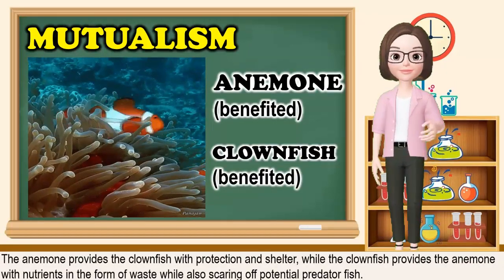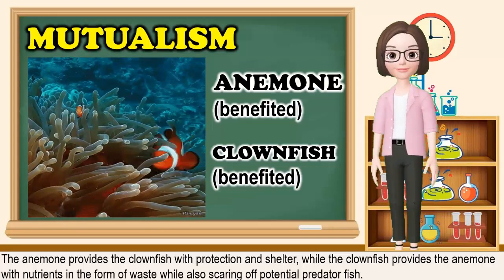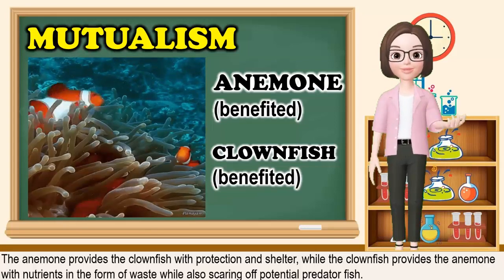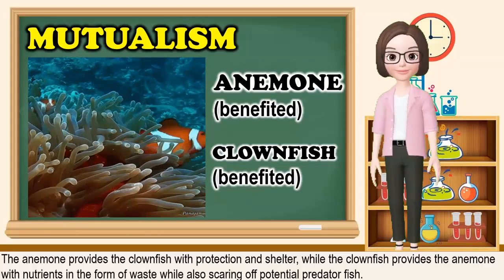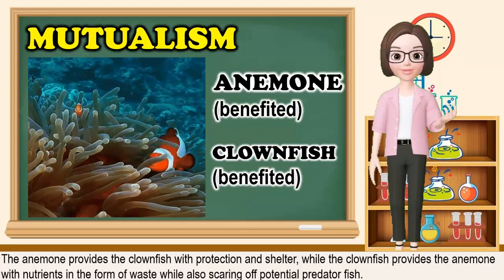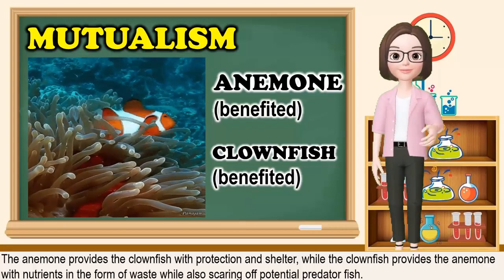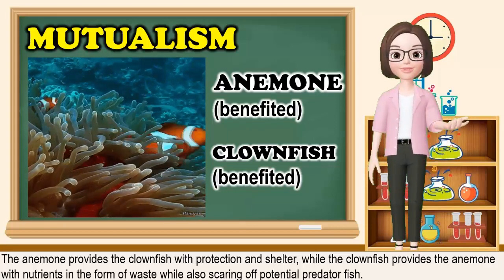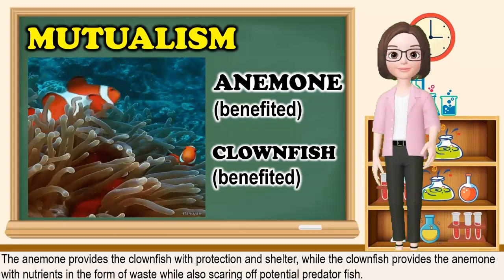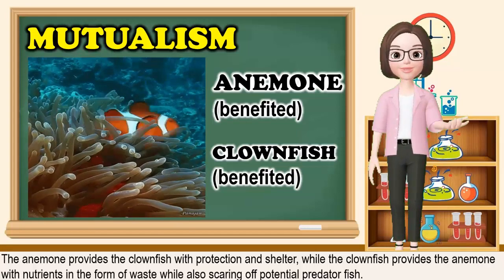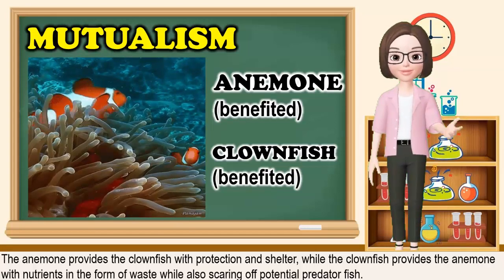Let's take a look at another example. The anemone provides the clownfish with protection and shelter, while the clownfish provides the anemone with nutrients in the form of waste, while also scaring off potential predator fish.